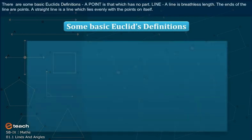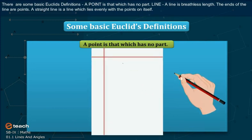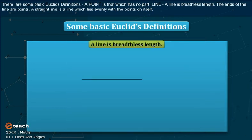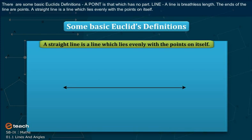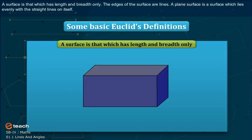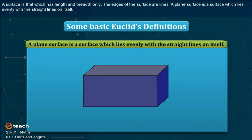There are some basic Euclid's definitions. A point is that which has no part. A line is breadthless length. The ends of a line are points. A straight line is a line which lies evenly with the points on itself. A surface is that which has length and breadth only. The edges of the surface are lines. A plain surface is a surface which lies evenly with the straight lines on itself.